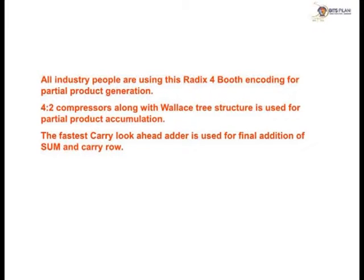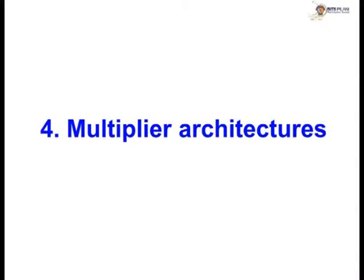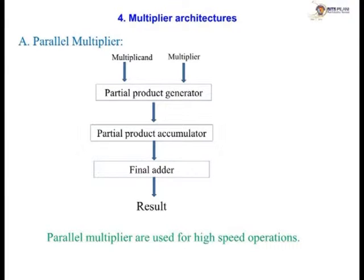So we will go through the multiplier architectures, after that we will stop. One is parallel multipliers — you know. What is the meaning of parallel multiplier? You give input, get output — there is no intermediate block. The time it takes is from when input is given to when output is found. That is the parallel multiplier, which has a partial product generator, partial product accumulator/compressor as we discussed, and a final adder. Parallel multipliers are used for high-speed applications.